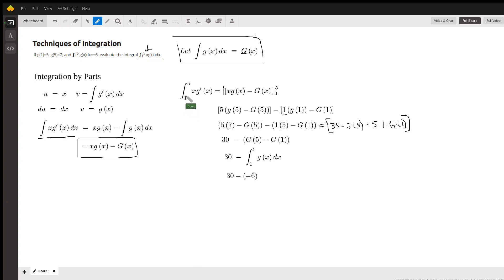The definite integral from 1 to 5 is this antiderivative evaluated from 1 to 5. I'll substitute 5 for x, then subtract when I substitute 1 for x.